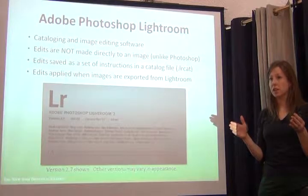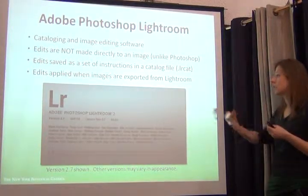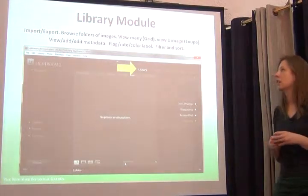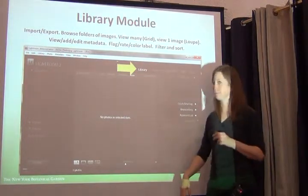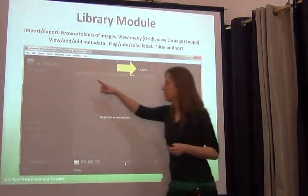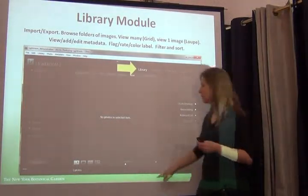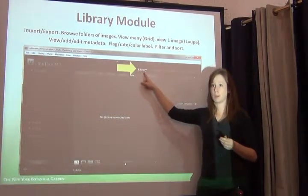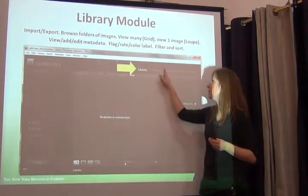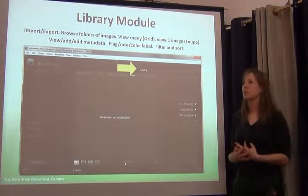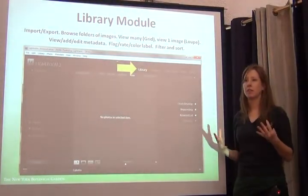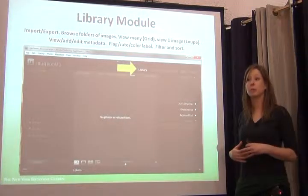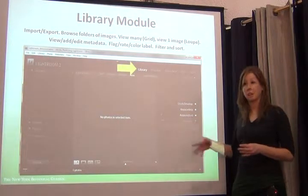Let me introduce you to how the software is laid out. We have panels: a left-hand panel, top panel, right panel, and bottom panel. We also have different modules — a library module and a develop module. The library module covers everything textual or human-readable about the image: camera make, date captured, keywords, title, who took the picture, GPS coordinates if your camera supports it, and any textual information you add.